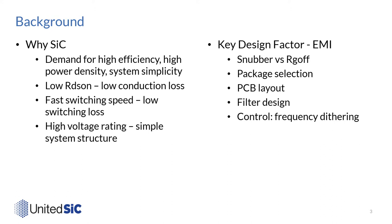There are many approaches to EMI reduction. We will discuss snubber versus RGOFF today. We can also reduce EMI by proper selection of the package — a smaller footprint means less parasitic inductance, but also means worse thermal performance. As to PCB layout, we want to minimize all parasitic inductances, capacitances, and electromagnetic coupling on the PCB. We will always have filter design to help meet EMI requirements and ease design trade-offs. Beyond that, we can even use control measures to improve EMI.